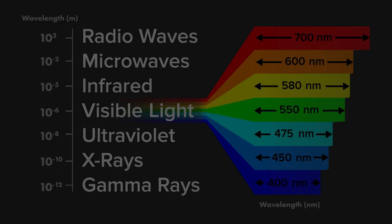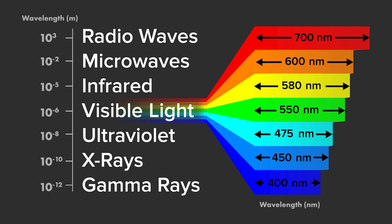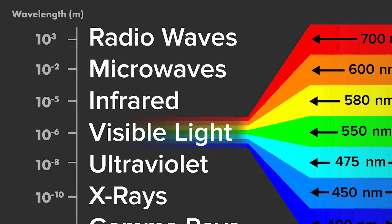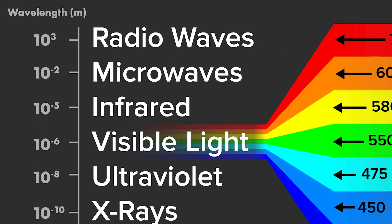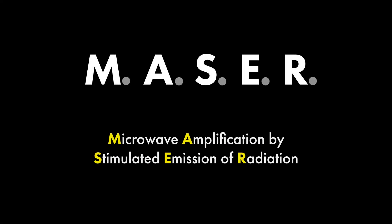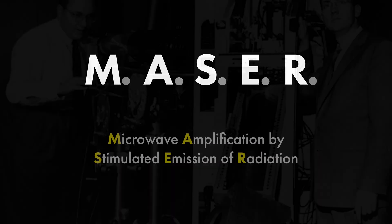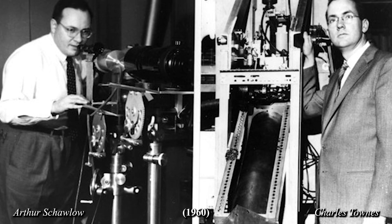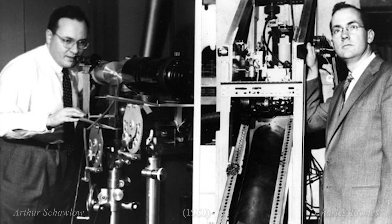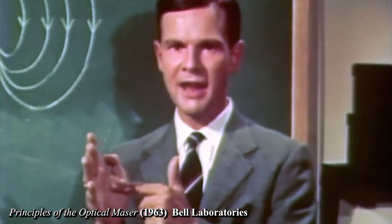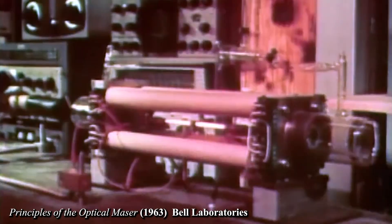The first step was to make a device that could produce stimulated emission at microwave frequencies, which are much lower frequency than visible light. This device was called a maser, and it was invented by Charles Townes, Arthur Schawlow, and others in the 1950s. They used gases, crystals, or liquids to make their maser work.